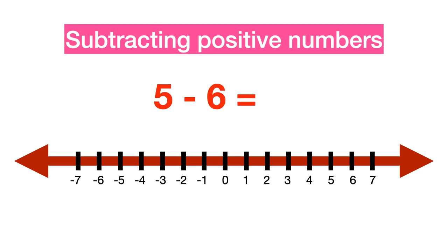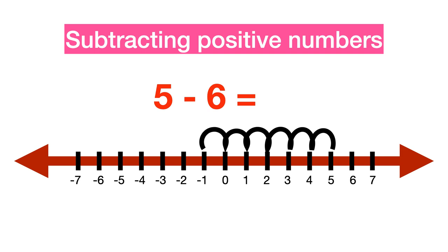Subtracting positive numbers. When subtracting positive numbers, the numbers move to the left with reference to the value of the second number. For example, to subtract 6 from 5, locate number 5 on the number line and move 6 steps to the left. The result is minus 1, which is the correct answer.